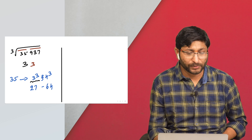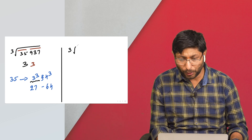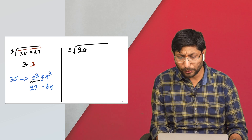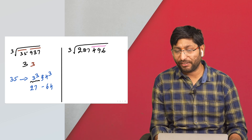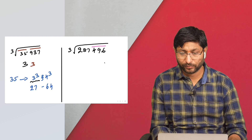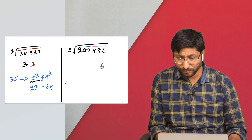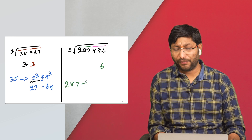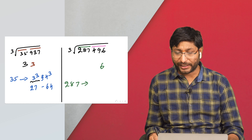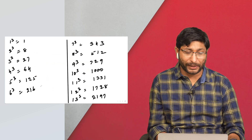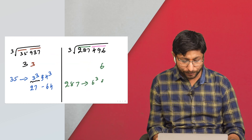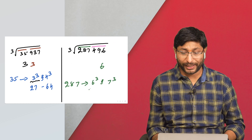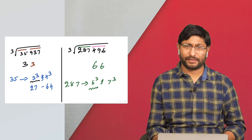Next: cube root of 287496. The cube root is ending with 6, so the answer also ends with 6. The remaining digits are 287. Checking cubes: 287 comes between 6³=216 and 7³=343, so consider the lowest number, 6. The cube root of 287496 is 66.